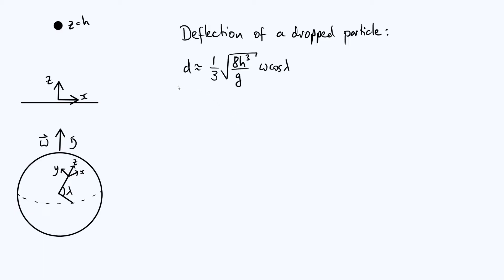Now as a reminder, the expression that we got last time is the one written down here. So here d is the eastward deflection, h is the height that you drop the particle from, g is the gravitational acceleration, omega is the angular speed of the earth's rotation, and lambda is the latitude of the point where you're doing this experiment.